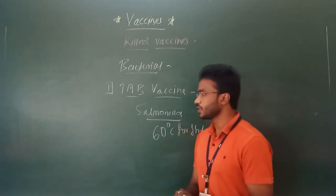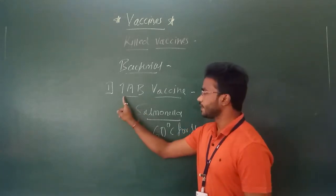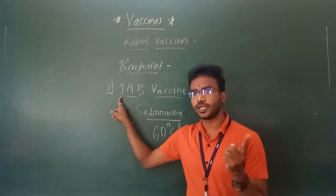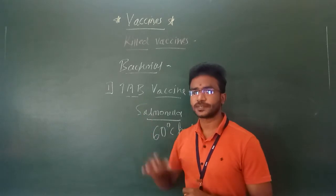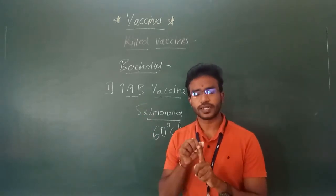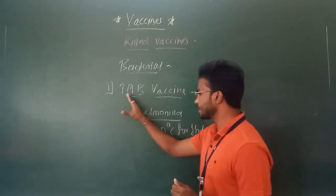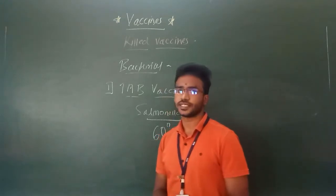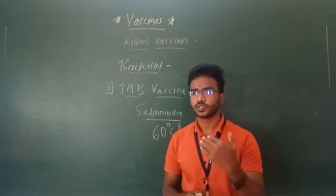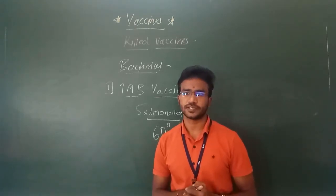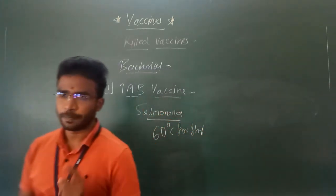TAB vaccine is a suspension of different bacteria. T stands for Salmonella Typhi, A stands for Salmonella Paratyphi A, and B stands for Salmonella Paratyphi B. So the suspension of Salmonella Typhi, Paratyphi A, and Paratyphi B is prepared, and this suspension is heated at 60 degrees Celsius for one hour to produce the TAB vaccine. TAB vaccine is an example of a heat-killed vaccine.